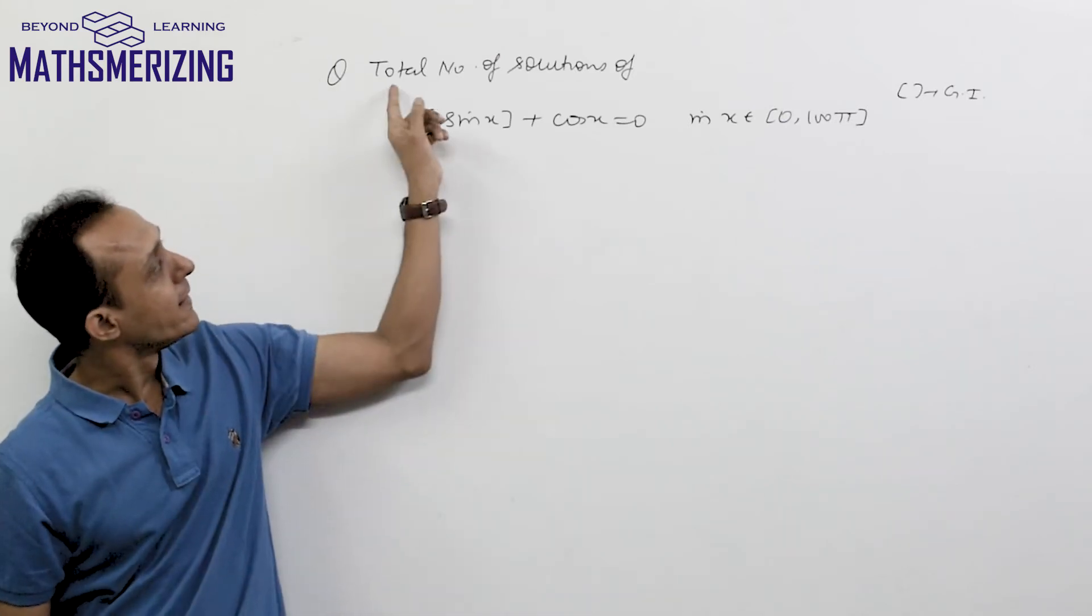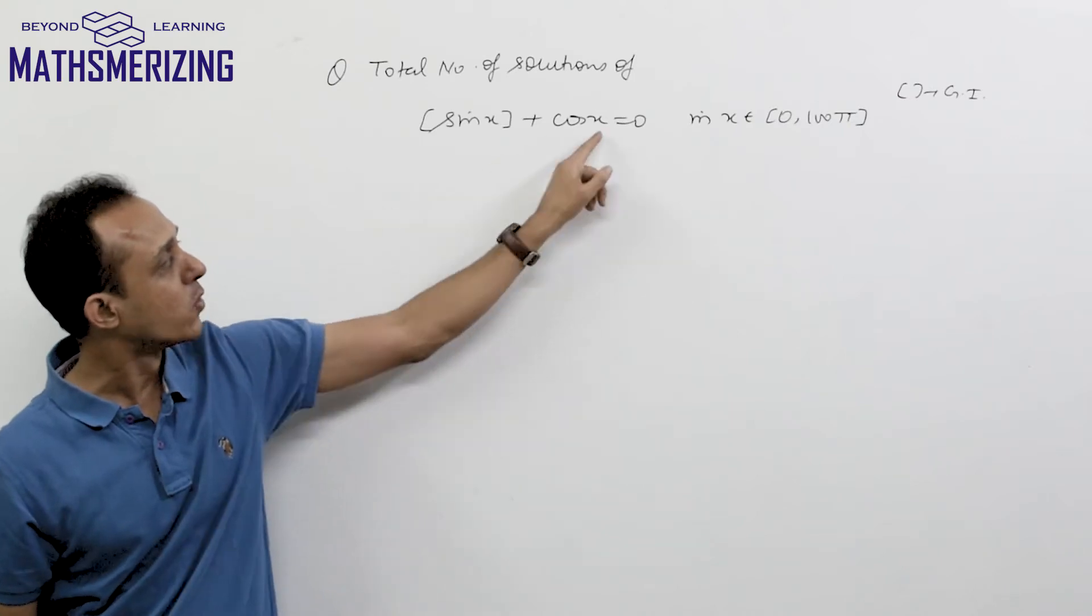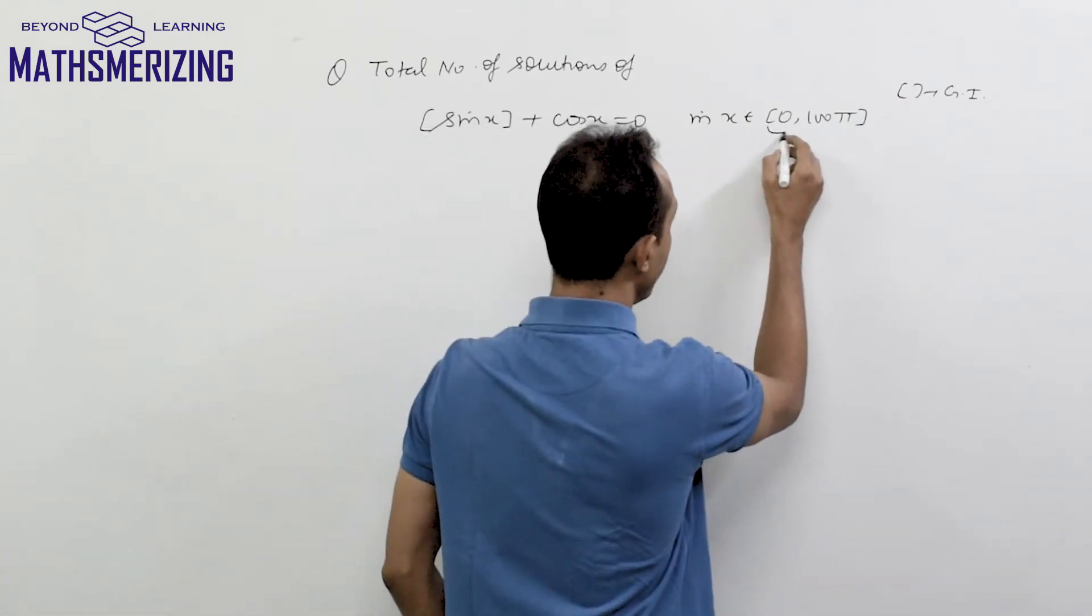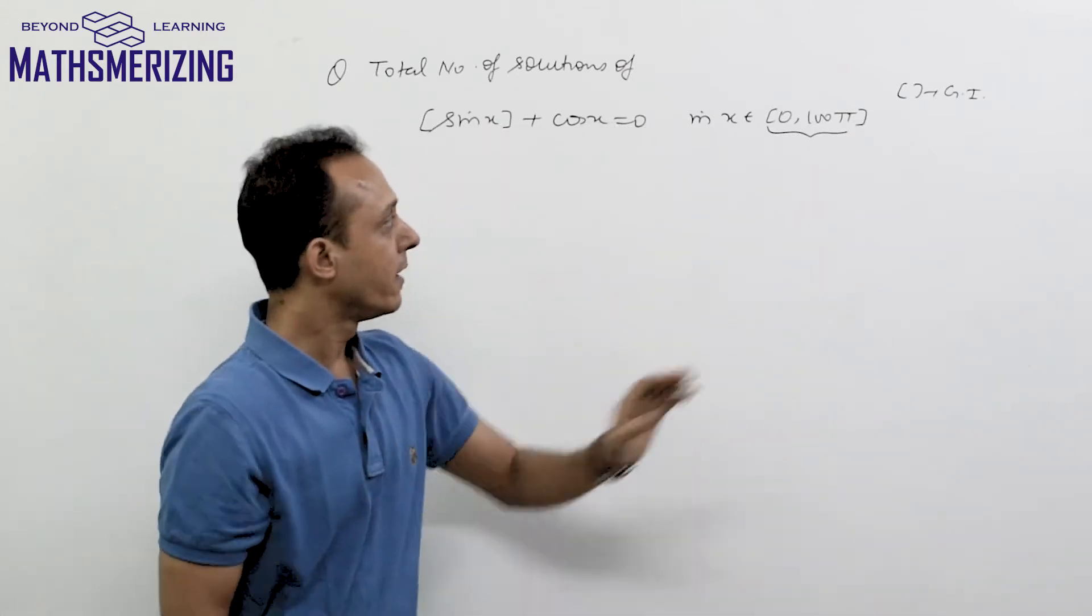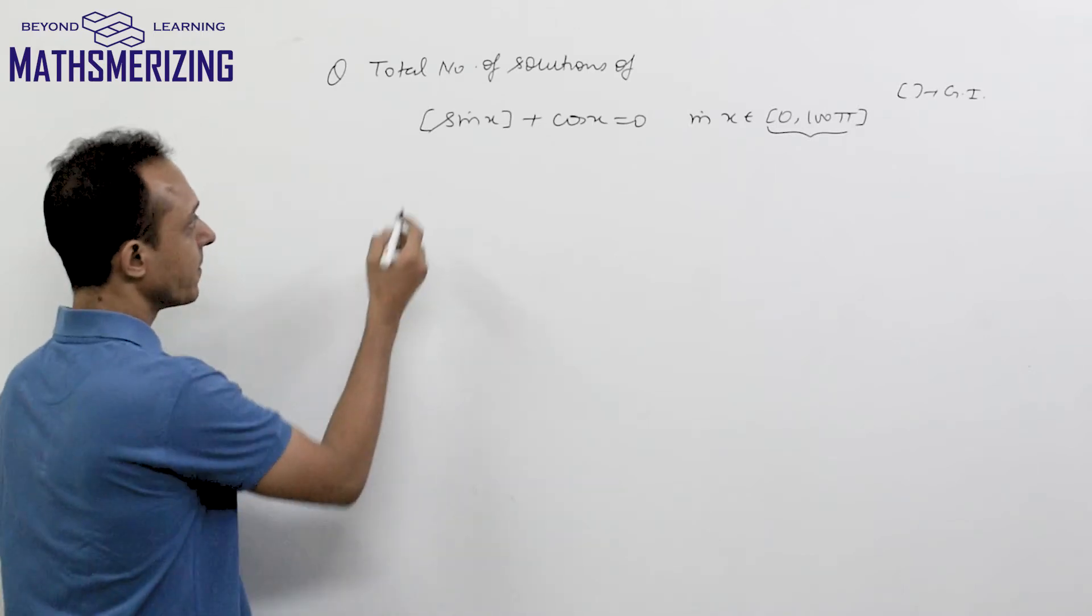Let us take up another question. The question is: find the total number of solutions of the equation [sin x] + cos x = 0, where x belongs to [0, 100π]. This box represents the greatest integer function.